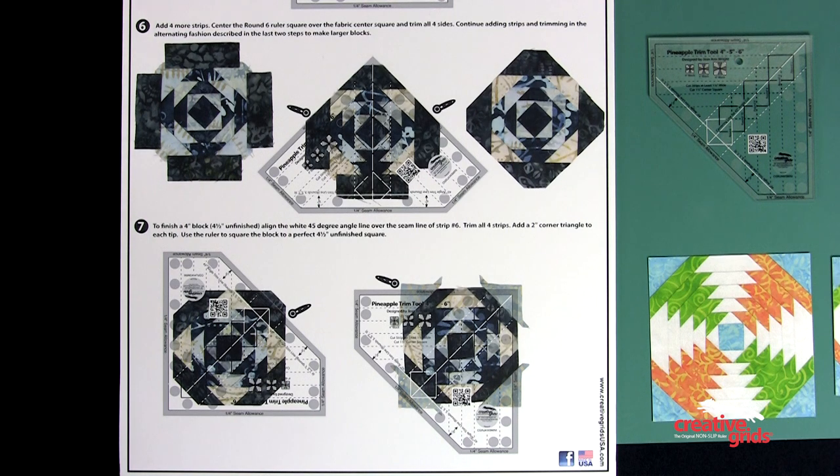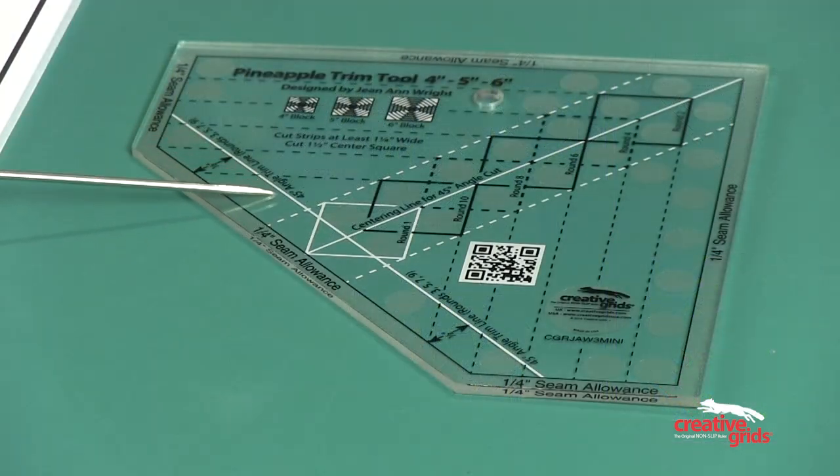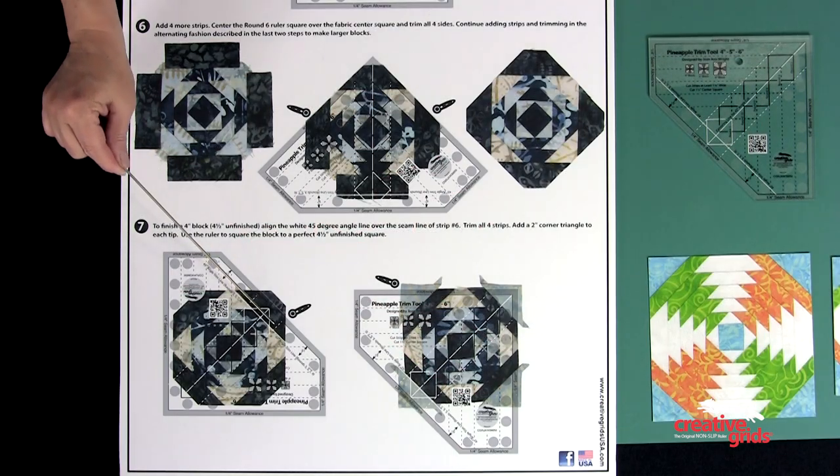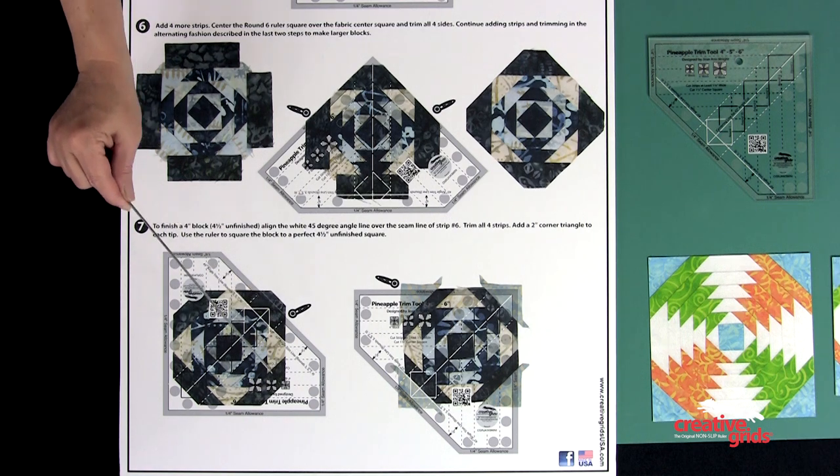To complete your four inch block, trim the outside edge of the round six strips to three quarters of an inch using the 45 degree angle line. Place the 45 degree white line on the seam line as before and trim all four sides.